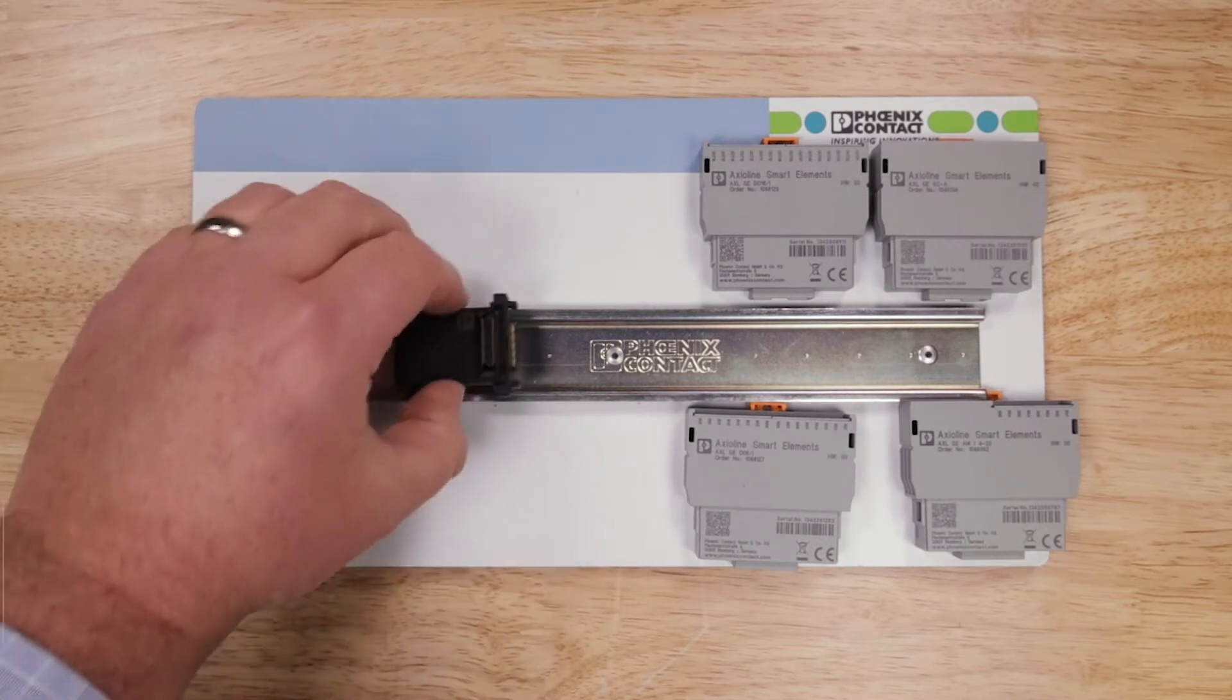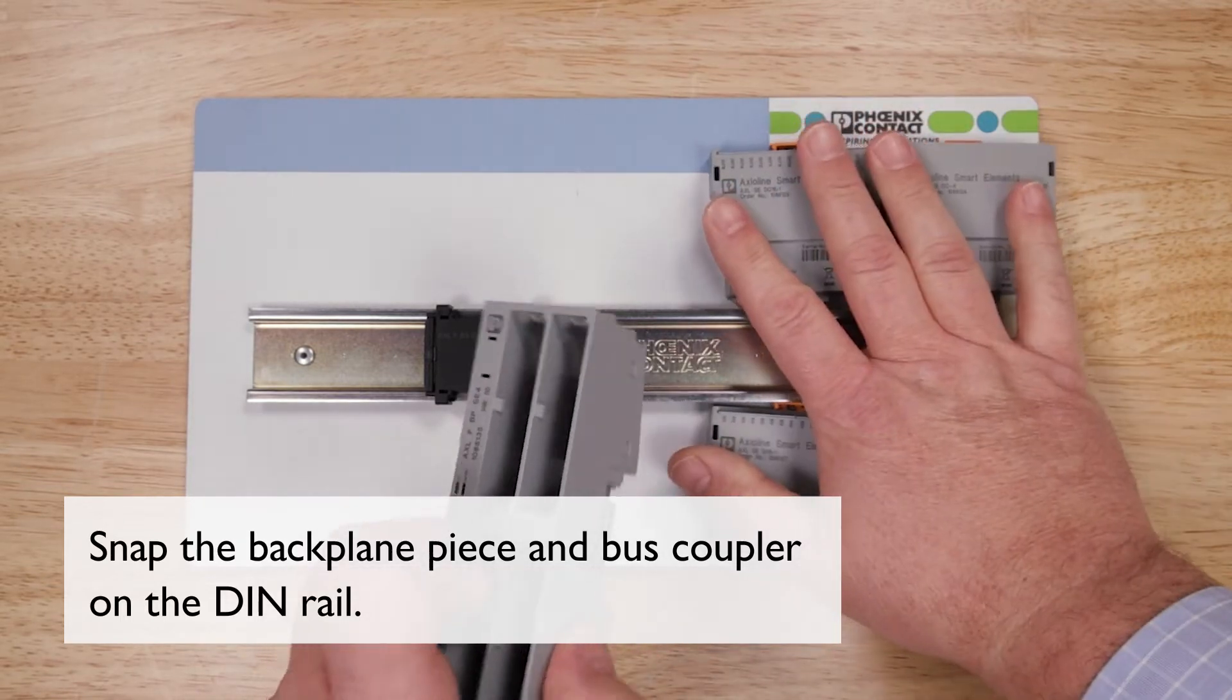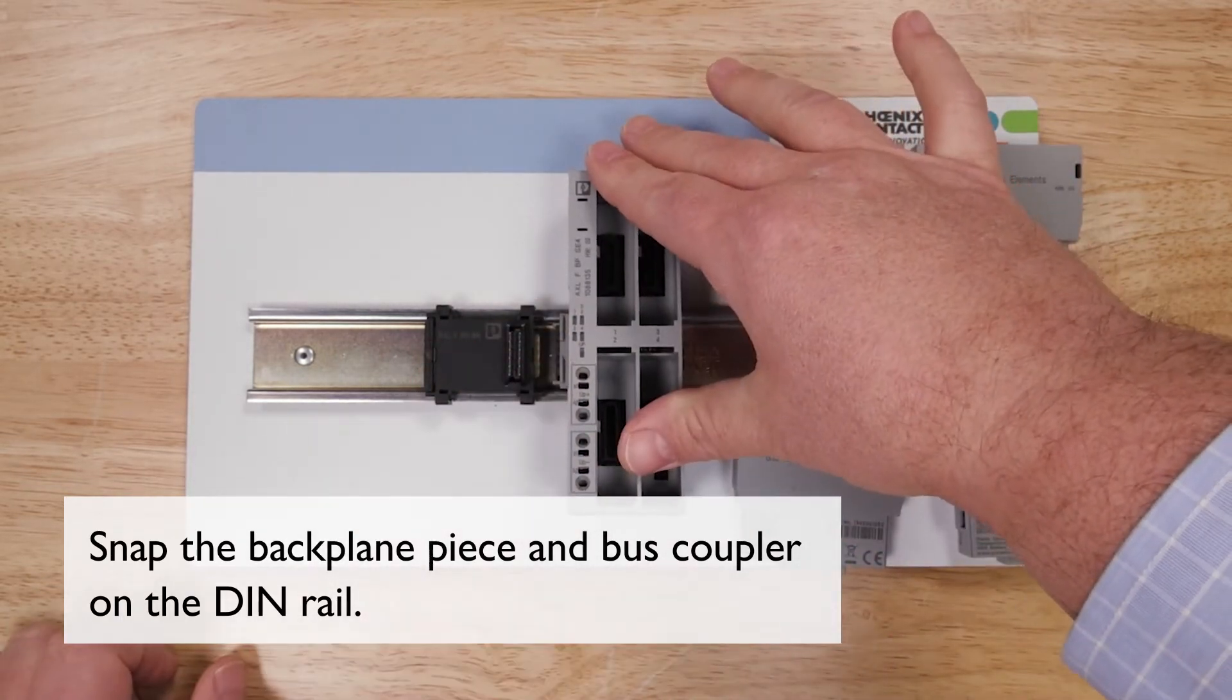Step 1 is to take the backplane piece for the bus coupler and snap that onto the rail. Simply take the Smart Element base, snap it onto the rail, and connect the two together.